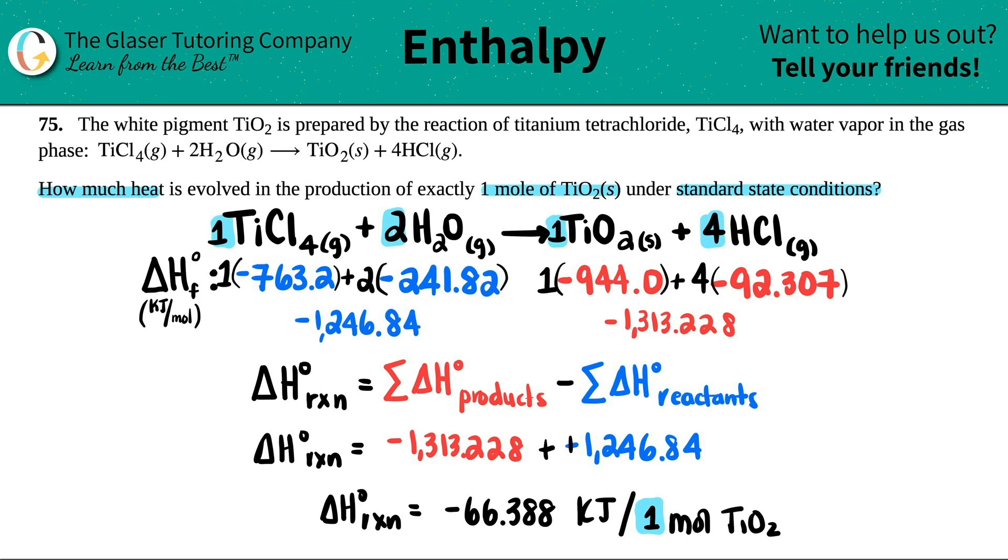So how much heat is actually evolved? Negative 66.388 kilojoules. And the negative just means that the heat is being released. So 66.388 kilojoules will be made and it will be released into the environment.